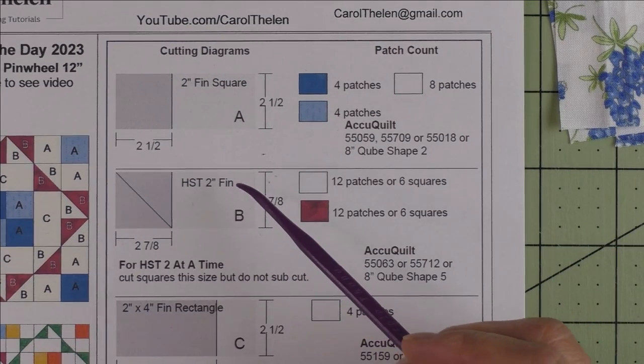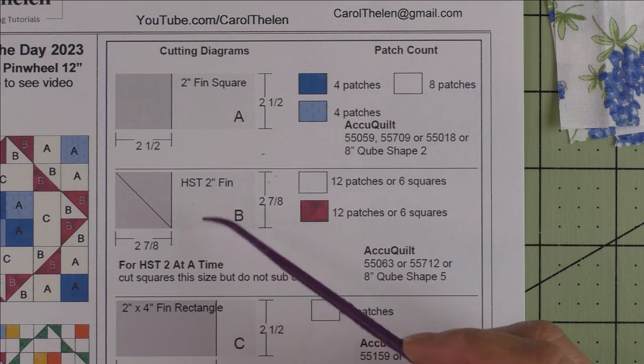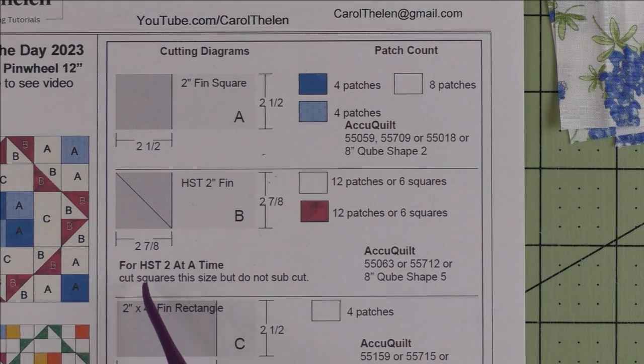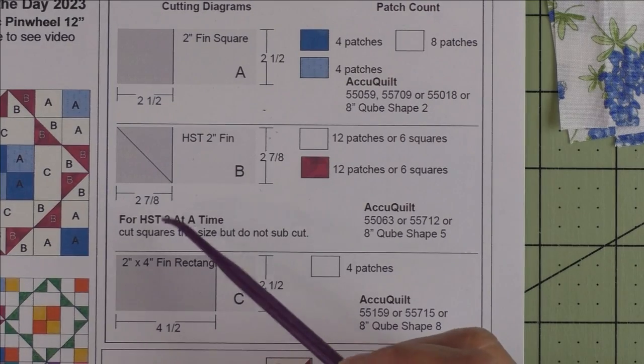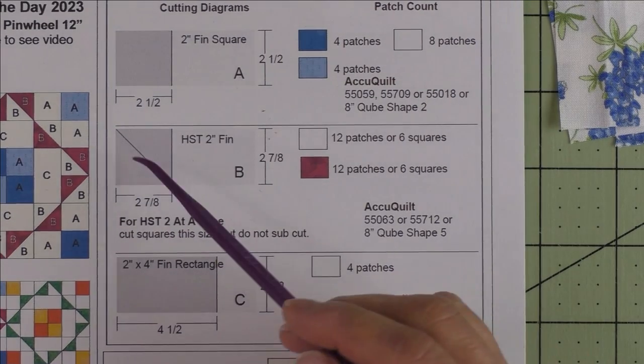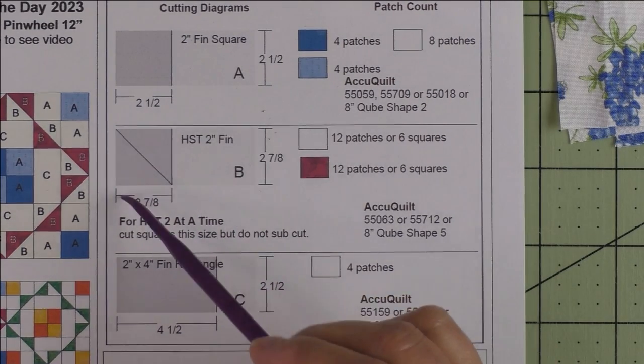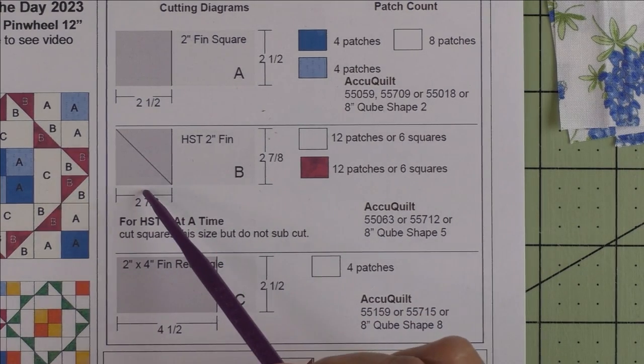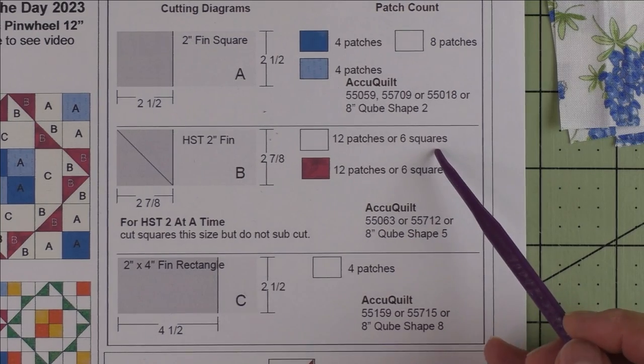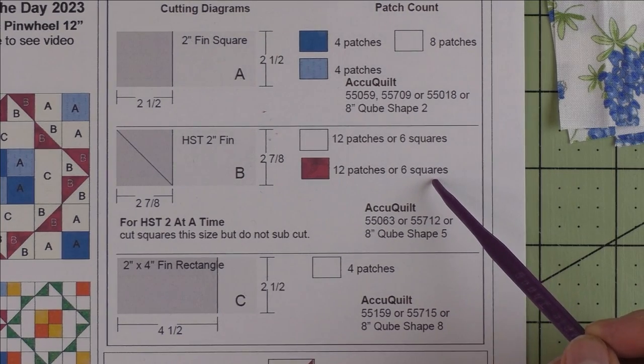Patch B is a 2 inch finished half square triangle, and we're going to make the half square triangles two at a time. If you rotary cut, you can use this method. You'll cut 2 and 7/8 inch squares, but we will not cut them in half diagonally. We'll keep them in squares. We'll need six squares of the background and six squares of the red fabric.